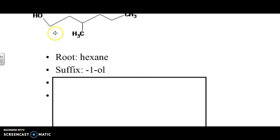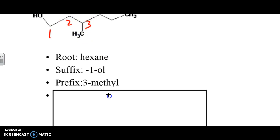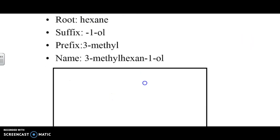We can see that alcohol is going to take the priority in this case. So, therefore, we're going to name this 1, 2, 3. We can see that there's a methyl group at spot 3. So, it's 3-methyl. When we put all this naming together, it is 3-methyl-hexan-1-ol.